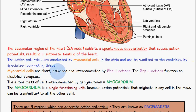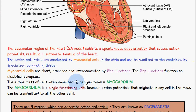The myocardial cells are short, branched, and interconnected by gap junctions, and these gap junctions function as electrical synapses. The entire mass of all these interconnected cells is called the myocardium, and the myocardium is a single functioning unit because action potentials originating in any cell can be transmitted to all other cells.